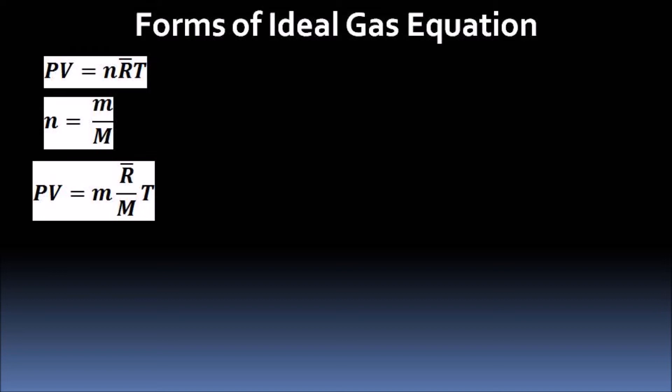Here we define a new variable R = R̄/M, the molecular weight, and this is called the gas constant for a specific gas. It changes with the gas, and the resulting equation is PV = mRT.